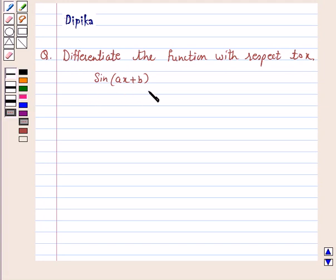Let's start the solution. Let y equal our given function, so y = sin(ax+b).